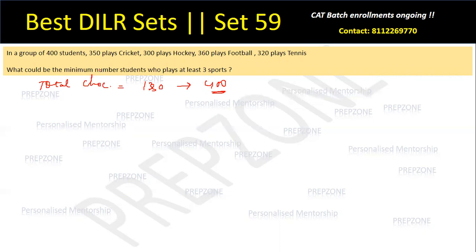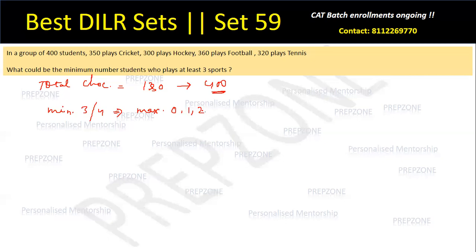The set asks for the minimum number of students who play at least three sports, which means I need to minimize students who get at least three chocolates. The maximum number of chocolates a student can get is four, since there are four variables. So I need to minimize students getting either three or four chocolates, which means I need to maximize the number of students who get zero, one, or two chocolates.